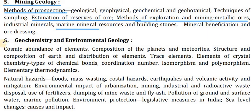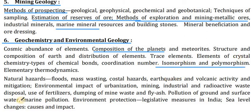In point number six, Geochemistry and Environmental Geology: cosmic abundance of elements, composition of the planets, meteorites, structure and composition of the earth and distribution of elements, trace elements, elements of crystal chemistry — types of chemical bonds, coordination number, isomorphism and polymorphism, elementary thermodynamics, natural hazards — floods, mass wasting, coastal hazards, earthquakes and volcanic activity and mitigation, environmental impact of urbanization, mining, industrial and radioactive waste disposal, use of fertilizers, dumping of mine waste and tailings, pollution of ground and surface water, marine pollution, environmental protection, legislative measures in India, sea level changes — causes and impact.